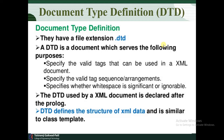DTD has two types: internal DTD and external DTD. The file extension for a DTD file is dot DTD — for example, if XYZ is the file name, it is stored as XYZ.dtd. DTD serves the following purposes: it specifies the valid tags that can be used in XML documents, specifies the valid tag sequence arrangement, and specifies whether whitespace is significant or ignored. The DTD used by an XML document is declared after the prologue.